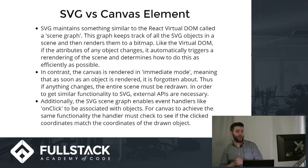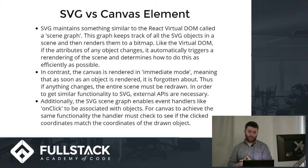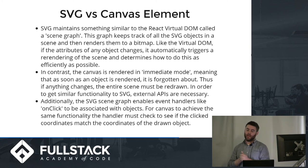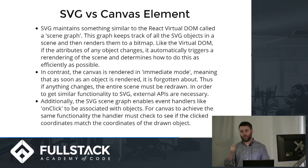Additionally, the scene graph enables event handlers like onClick, but the canvas element does not. In order to interact with elements on the canvas, you have to manually match the click coordinates with the area of the element being drawn to the canvas.